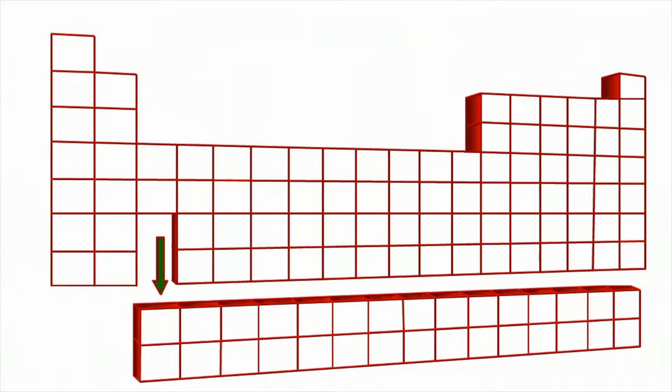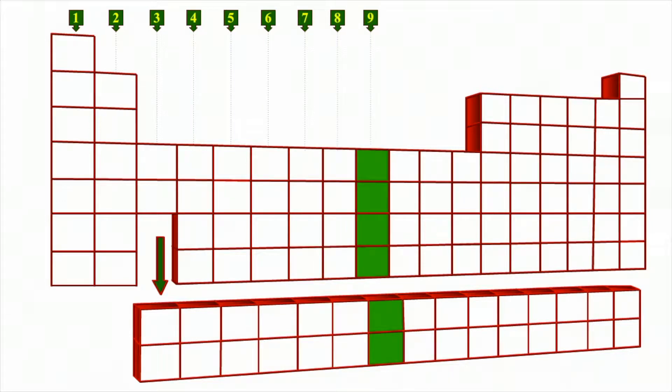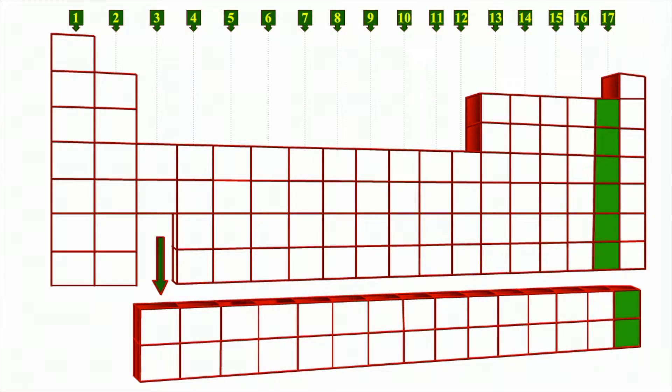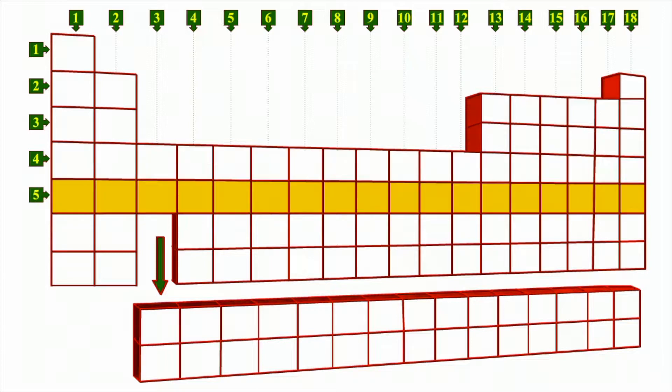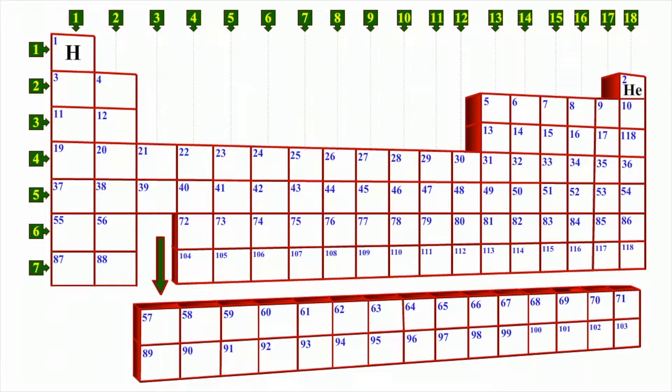The modern periodic table now arranges elements based on increasing atomic number. However, Mendeleev's original premise still holds true. The periodic law holds that properties of elements repeat with increasing atomic number, as the table shows.